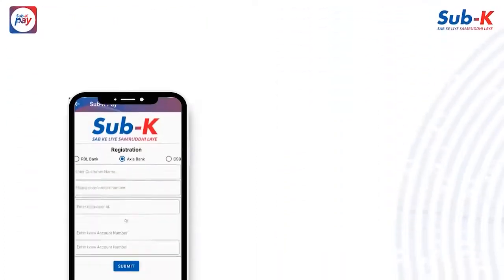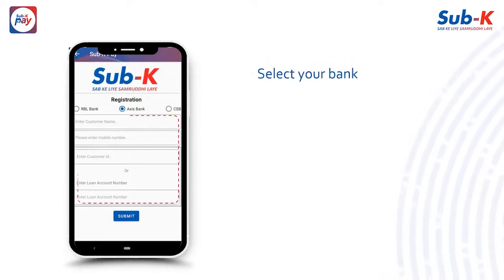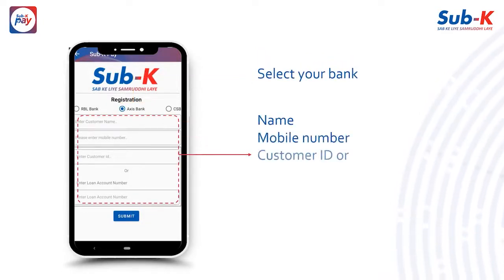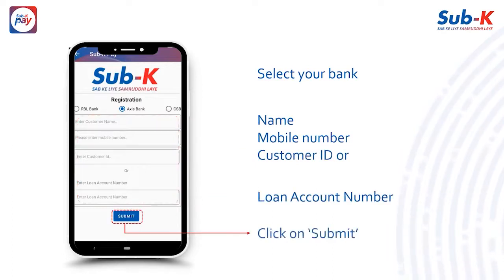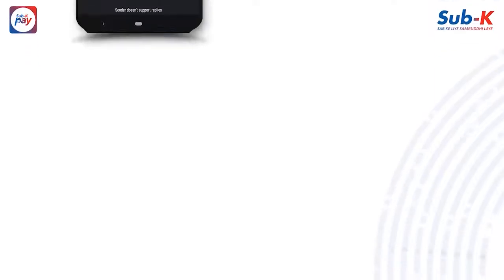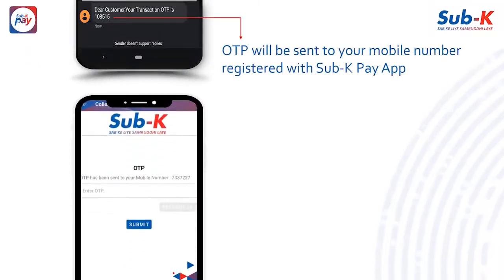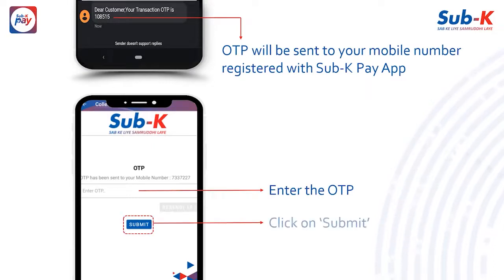To register, first select your bank. Then enter your name, mobile number, customer ID, and loan account number and click on Submit. An OTP will be sent to your registered mobile number. Enter the OTP in the application and click on Submit.